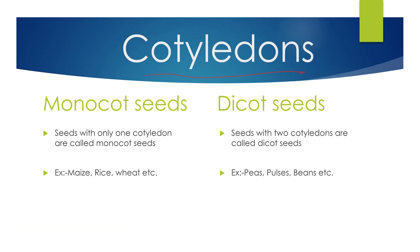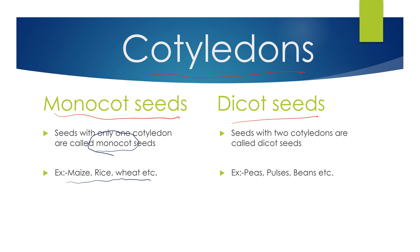Based on the number of cotyledons, seeds are classified into two types: monocot seeds and dicot seeds. Seeds with only one cotyledon are called monocot seeds. Examples of monocot seeds are maize, rice, wheat, etc.